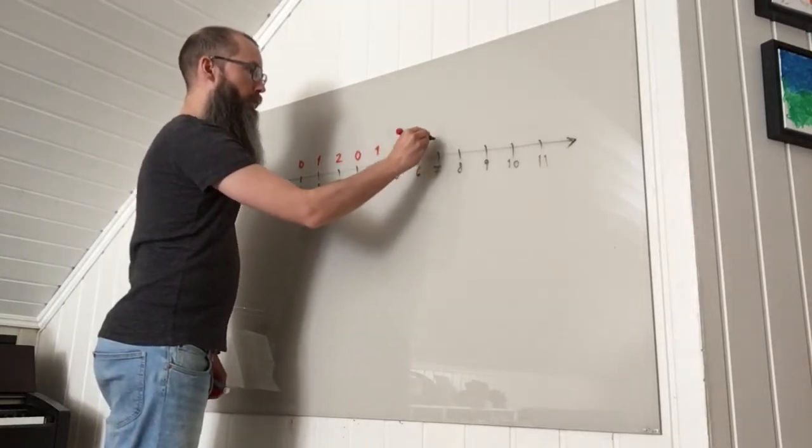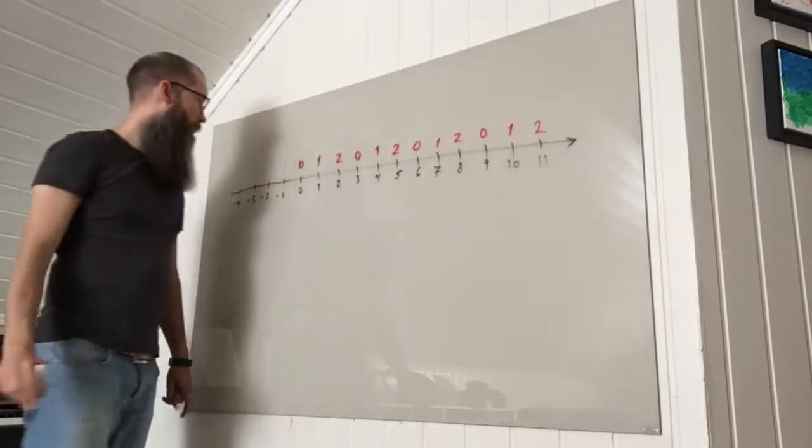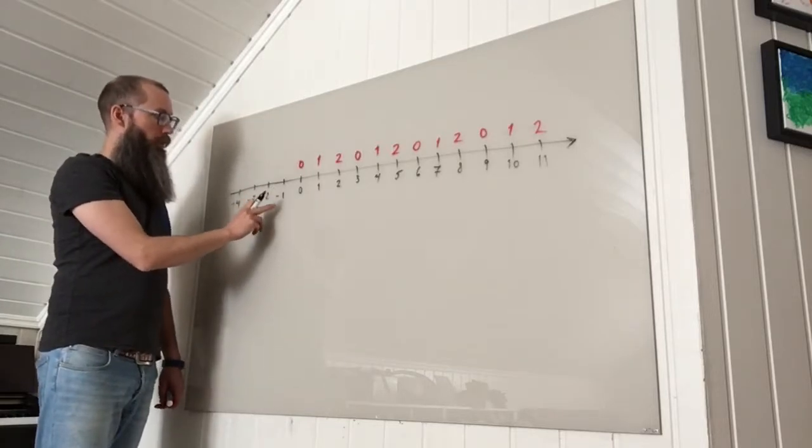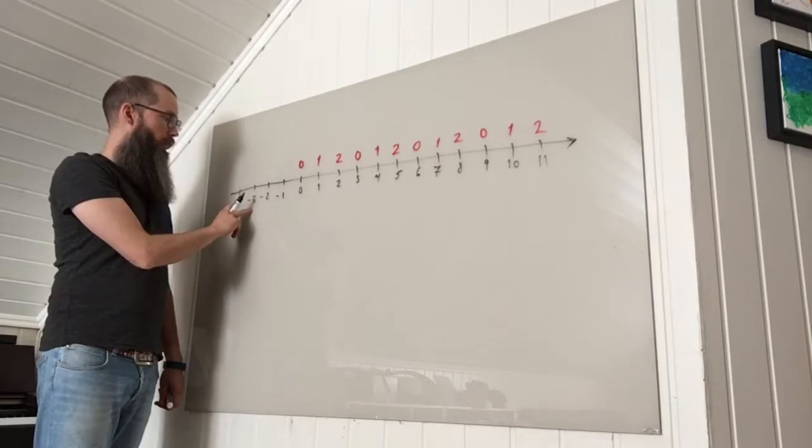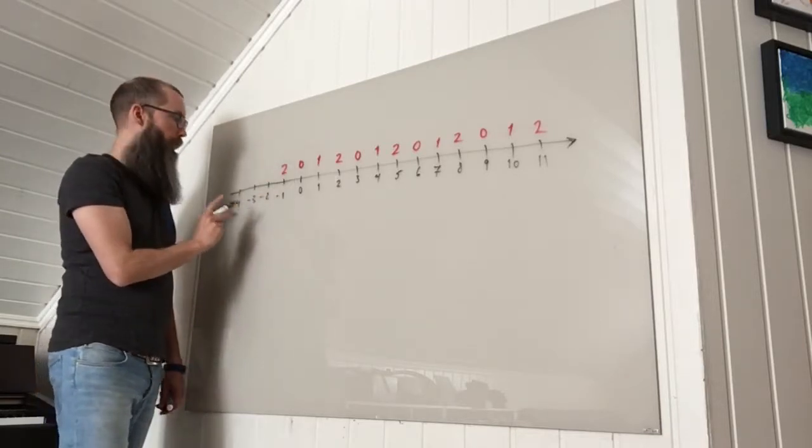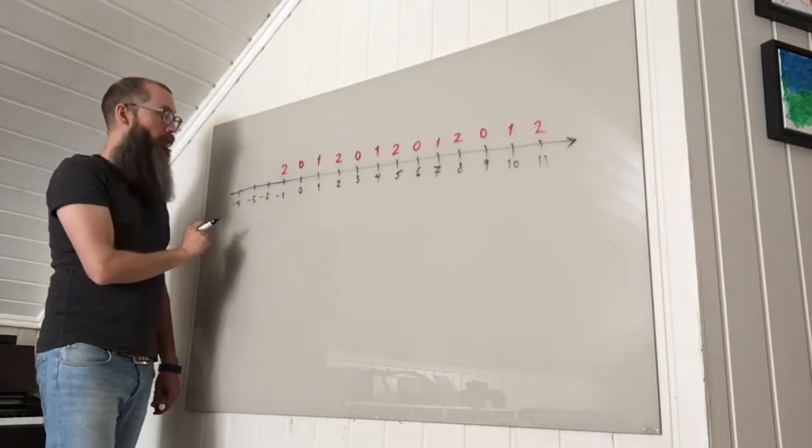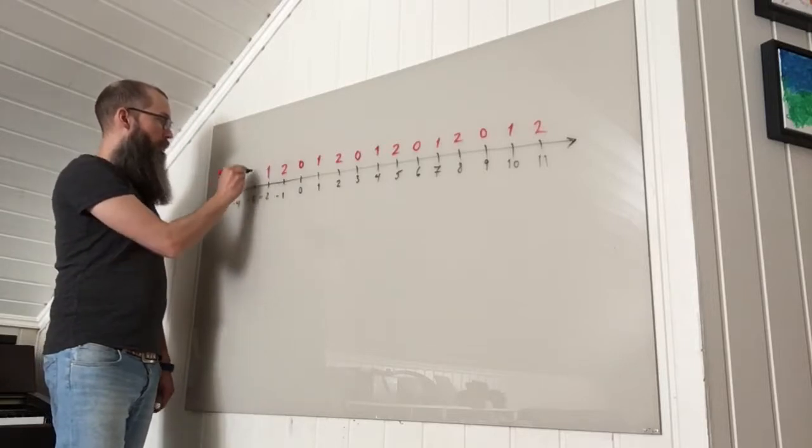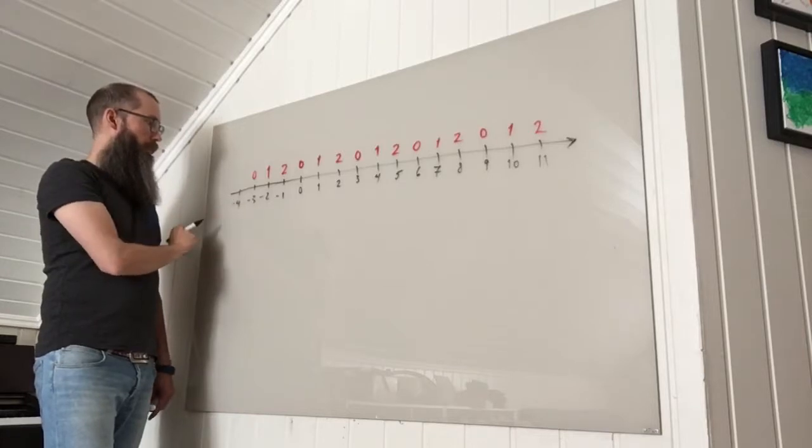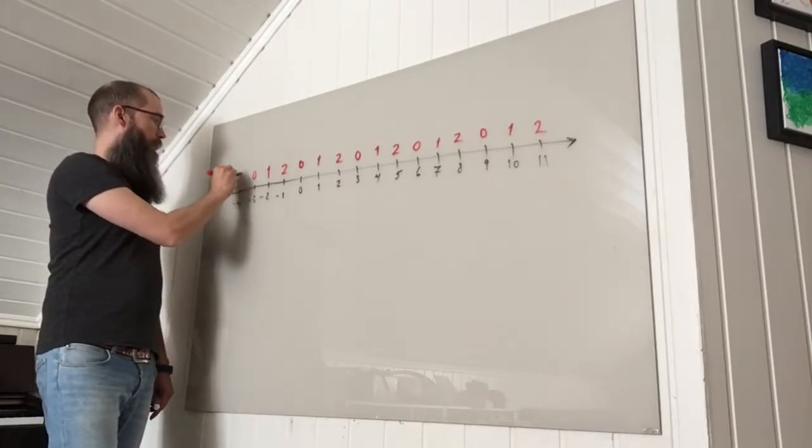And you see that remainders occur periodically. Also for the negative numbers minus 1, well that's minus 3 times 1 plus 2 so it has a remainder of 2 when divided by 3. Minus 2 is minus 3 plus 1 so it has a remainder of 1 and minus 3 divided by 3 is an integer so that's minus 3. And then you have a remainder of 2 again for minus 4.